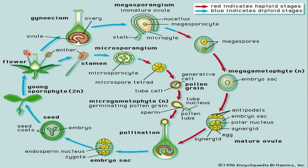And then on the male part, we have what we call microsporogenesis, which occurs in the anther of the stamen. The stamen is the male reproductive organ, and the final product is what we call the pollen grain. So the male gametophyte, which is the pollen grain, and the female gametophyte, which is the embryo sac, will later on fuse in the process of pollination.